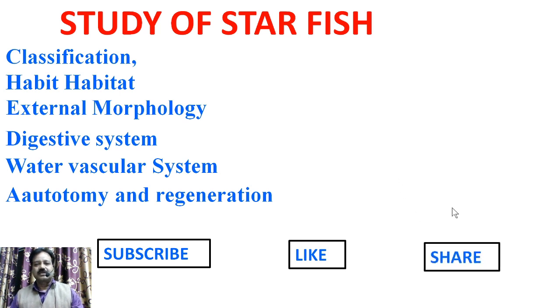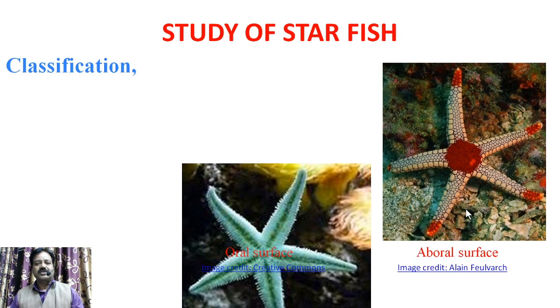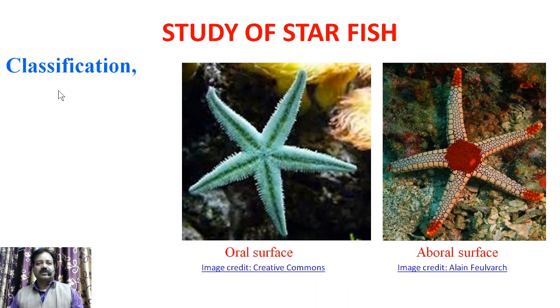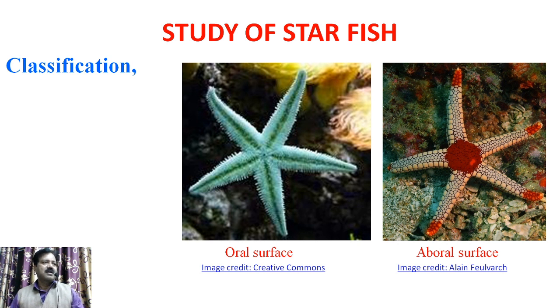We will start the study of Asterias rubens. First of all, we will discuss about the classification. Asterias rubens, that is starfish, belongs to Kingdom Animalia, Phylum Echinodermata, Subphylum Eleutherozoa, Class Asteroidea, Order Forcipulata, Family Asteridae, Genus Asterias, and species rubens.